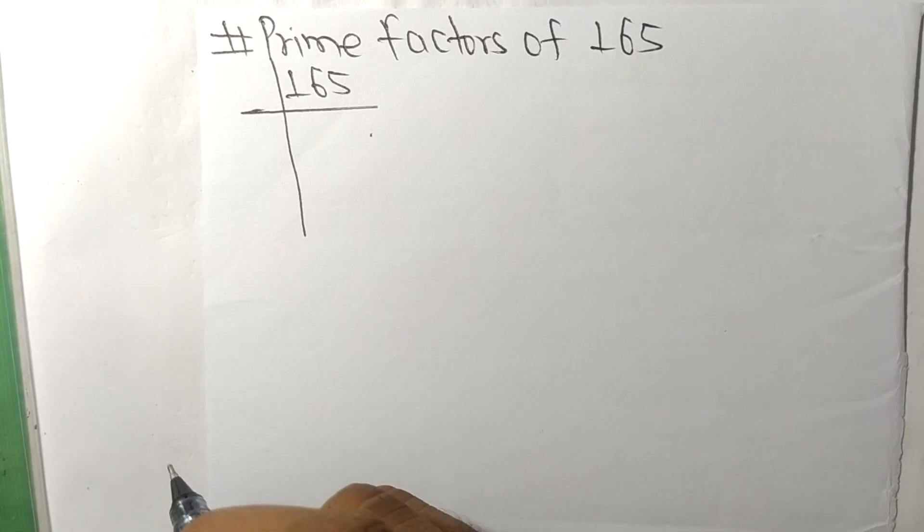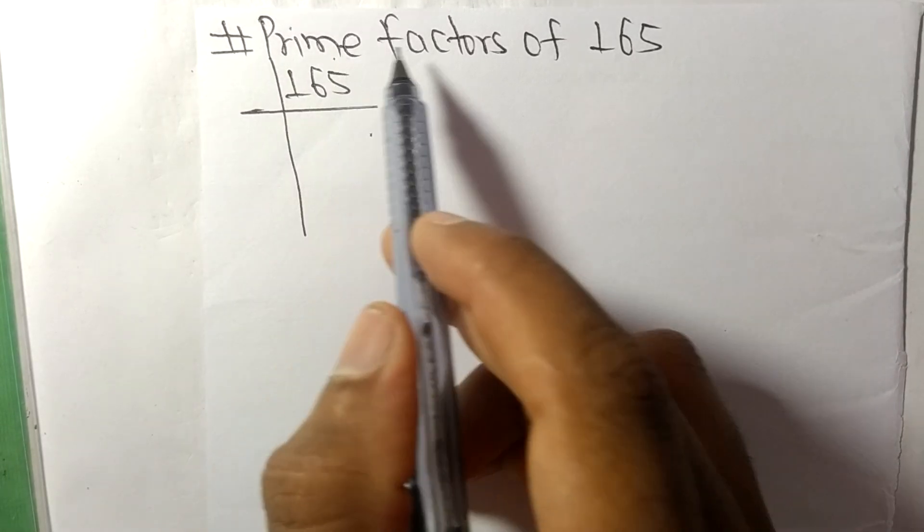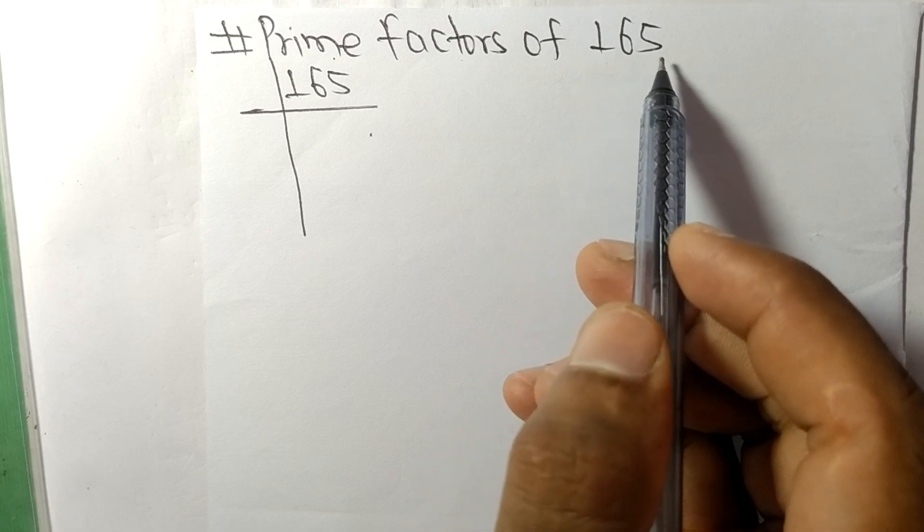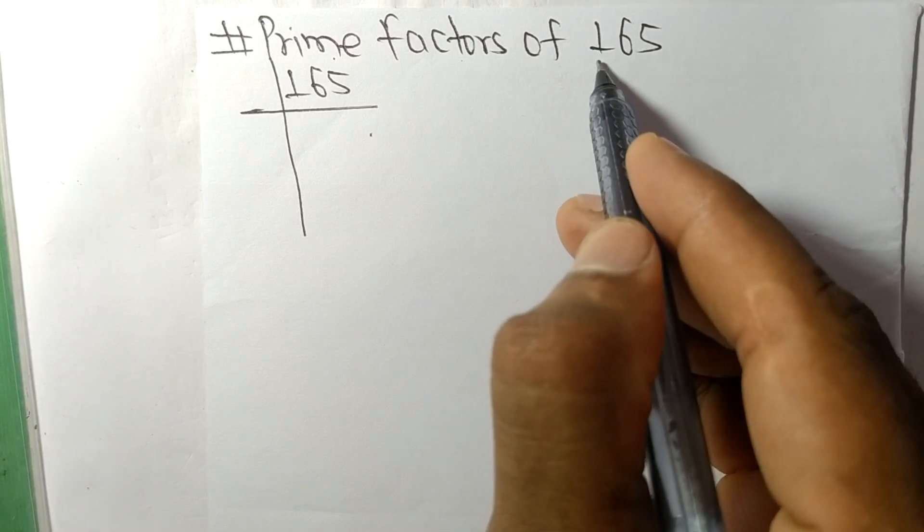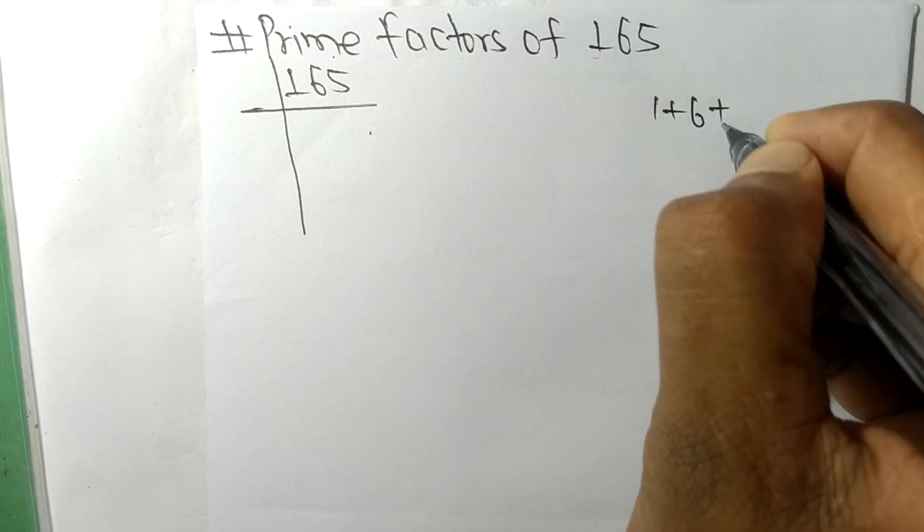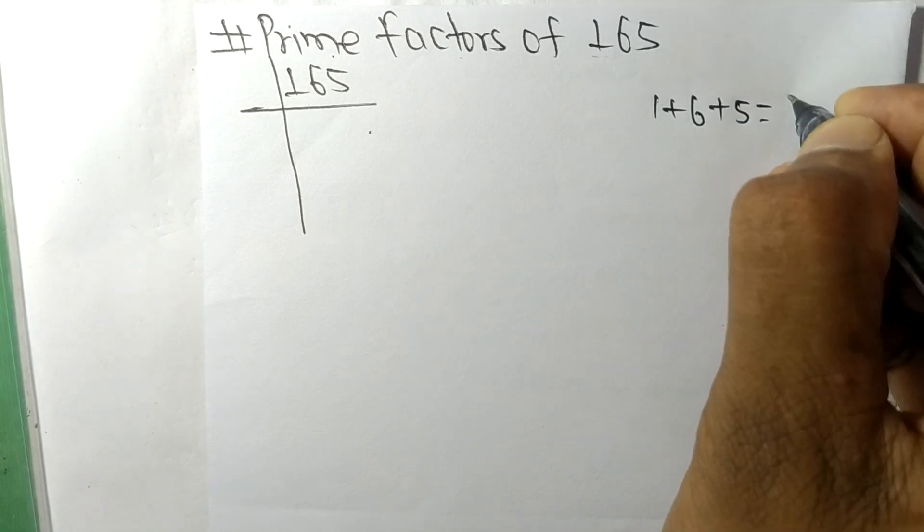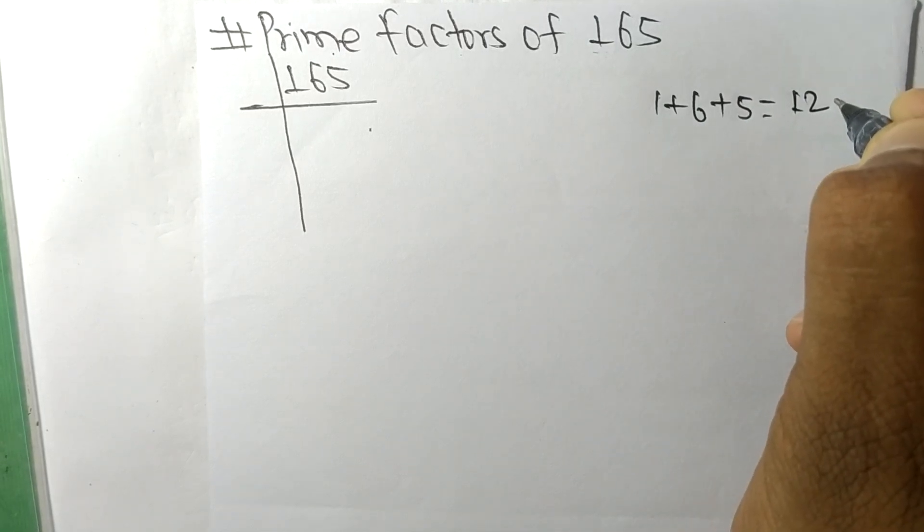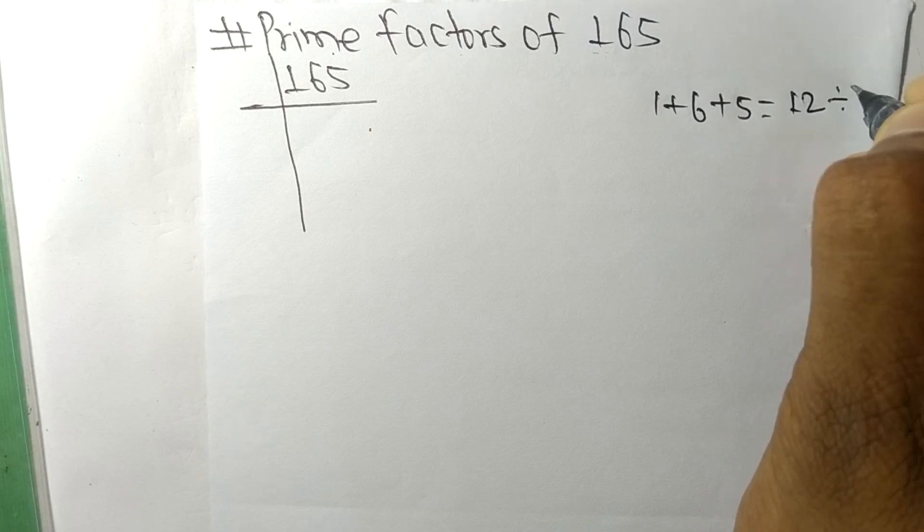Today in this video we shall learn to find the prime factors of 165. When we add all these numbers, that is 1 plus 6 plus 5, then we get 12, and 12 is exactly divisible by 3, so 165 is also divisible by 3.